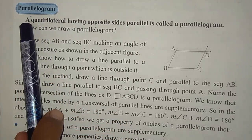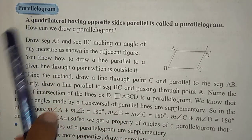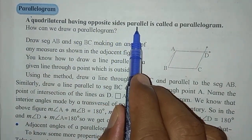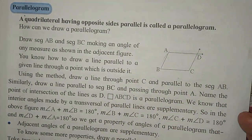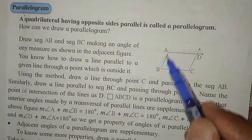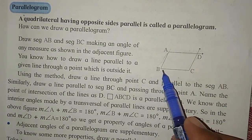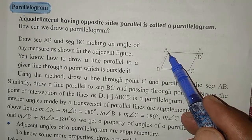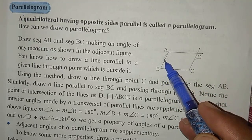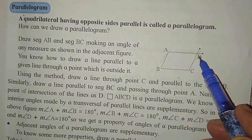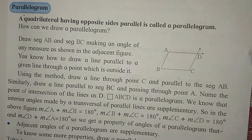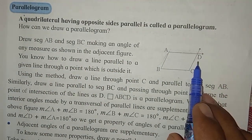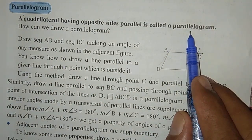The next type of quadrilateral is parallelogram. A quadrilateral having opposite sides parallel is called a parallelogram. In the given figure, quadrilateral ABCD has side BC and side AD parallel to each other, and side AB and side CD parallel to each other. When both pairs of opposite sides are parallel to each other, such a quadrilateral is called a parallelogram.